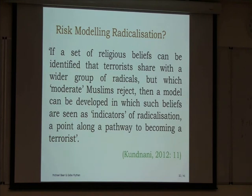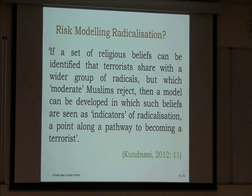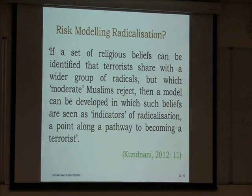Based on some of these reports, an idea of risk and riskiness begins to form around what we might do to prevent the risk of radicalization. If a set of religious beliefs can be identified that terrorists share with a wider group of radicals but which moderate Muslims reject, then a model can be developed in which such beliefs are indicators of radicalization — a point along the pathway to becoming a terrorist. This logic has been very pervasive and attractive to policy makers and governments — it provides them with a rationale, a model of behavior which enables them to point out that their interventions are necessary based on risky behavior.